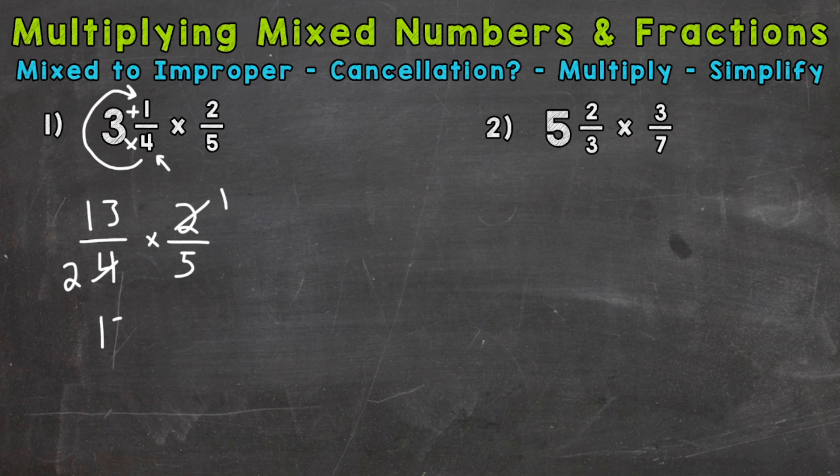So let me rewrite the problem. We have 13 over two times one over five. 13 and five do not share any common factors other than one. So we cannot use cross cancellation with the 13 and the five. So now we can multiply straight across. 13 times one is 13. Two times five is 10.